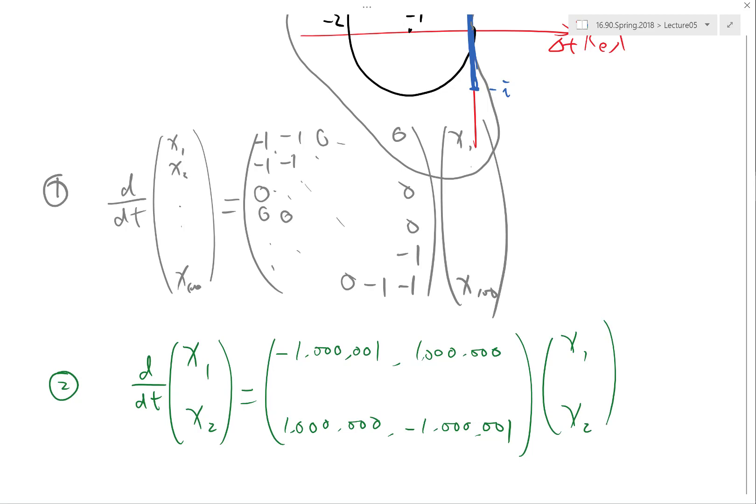Now the first one has a lot of zeros. In linear algebra terminology that means it's a sparse matrix, or this is a sparse ODE system. Does that make it easier to solve? Most likely yes, because the computation is less. Any other opinions on what makes one easier to solve than another?